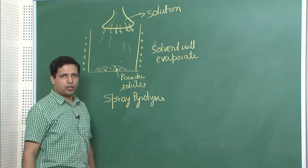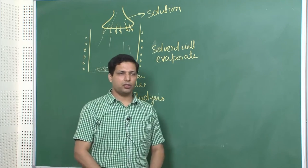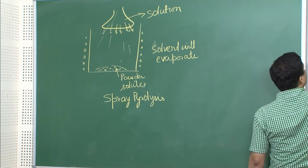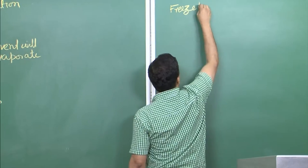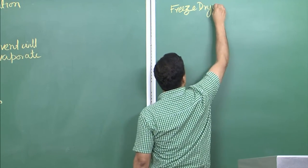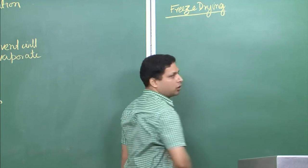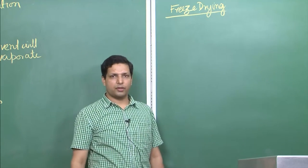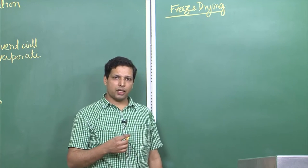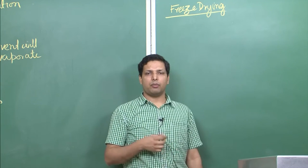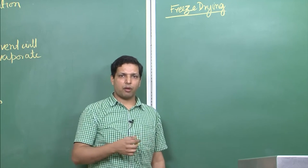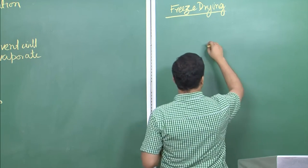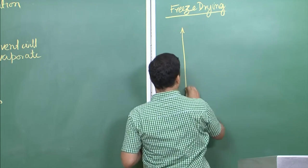Another technique which is similar to this but in principle very different is what is called freeze drying. Here the aim is that you first freeze it and then decrease the pressure so that the liquid, which is the solvent, is able to sublimate.